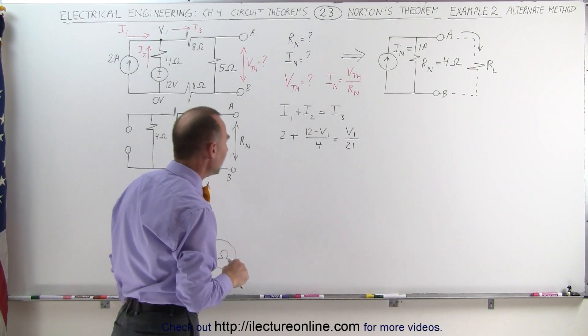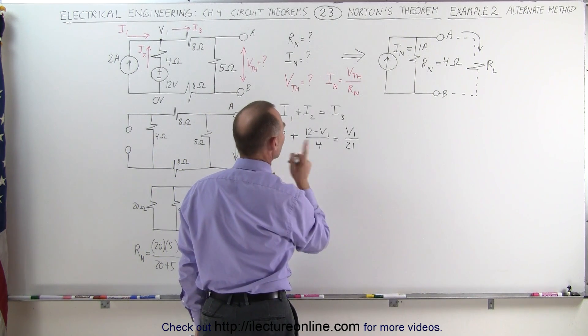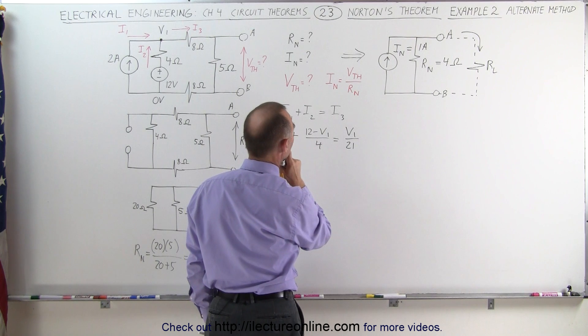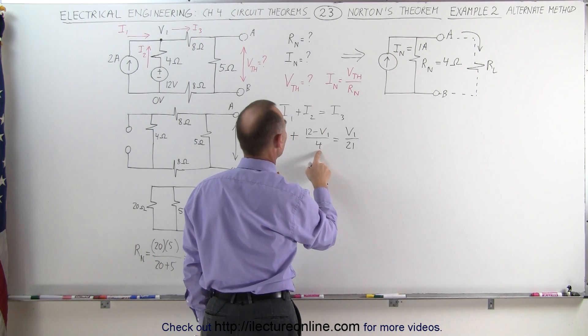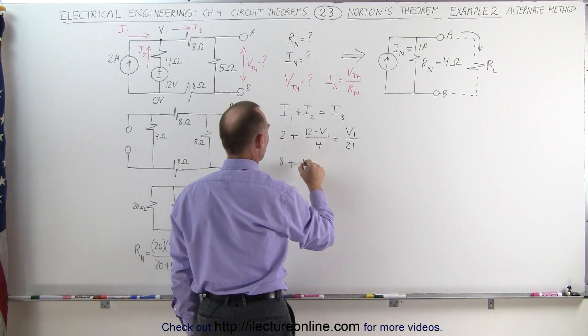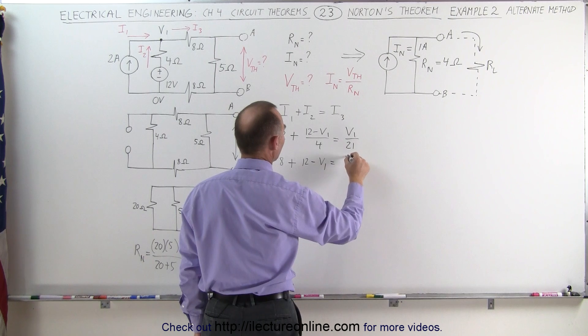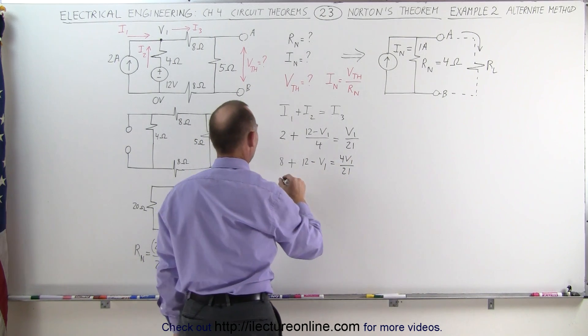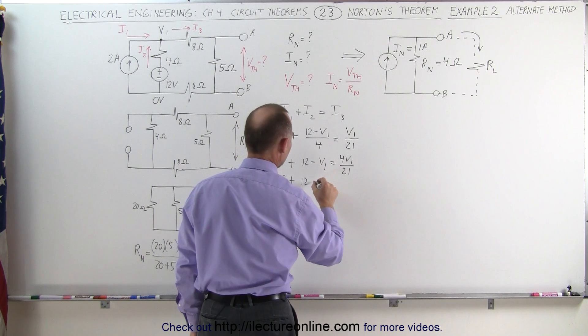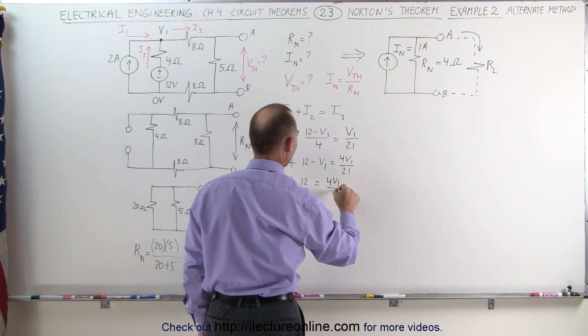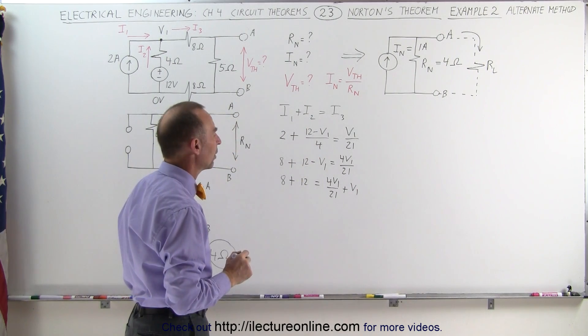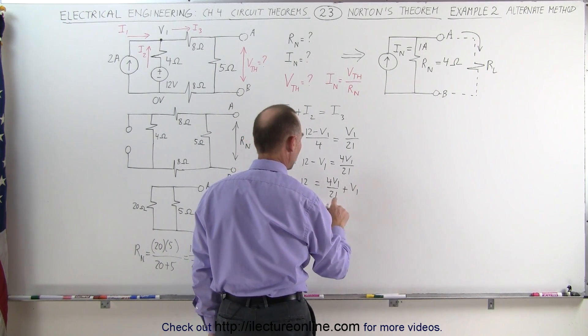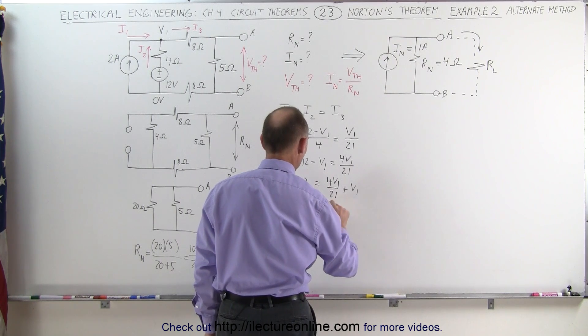We can do that by solving for V1. What we need to do here is multiply everything by, well we can multiply everything by 4 first and see what we get. I get 8 plus 12 minus V1 equals V1 or 4 V1 divided by 21. When I move this across the other side, I get 8 plus 12 is equal to 4 V1 divided by 21 plus V1. Now, 4 V1 plus V1, when I add this together, I get 20 is equal to 21 plus 4, which is 25 over 21 V1.